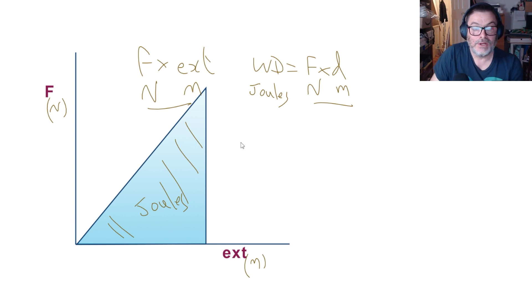Therefore the area under this graph is joules and it represents the energy that's stored in the wire. Of course because it's a triangle, the area under that graph, or the energy stored there, is known as the elastic strain energy and it's going to be equal to a half times the force times the extension.